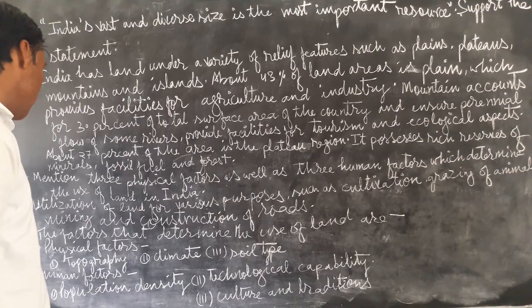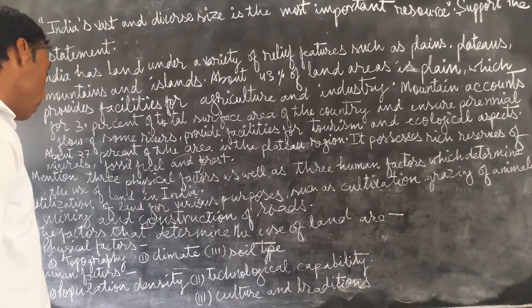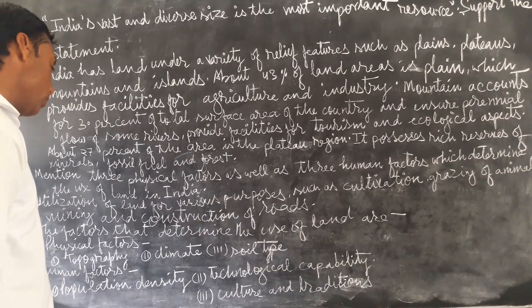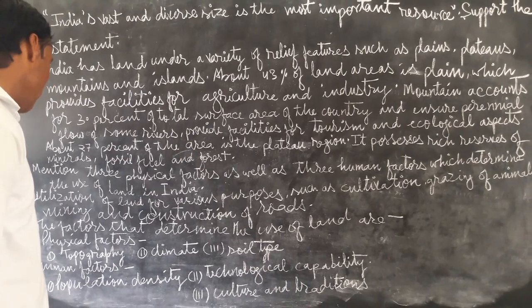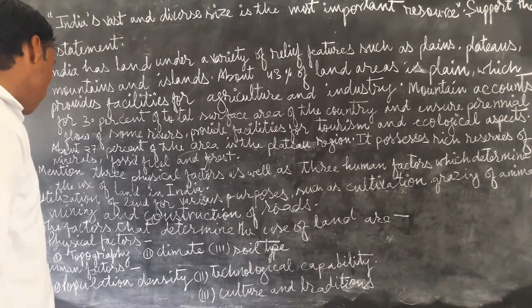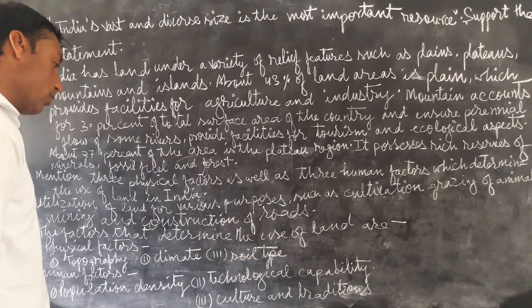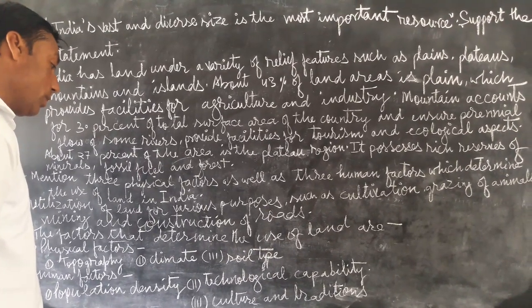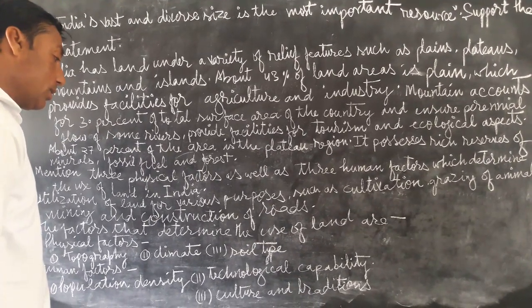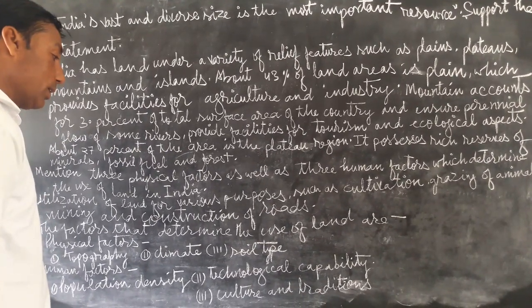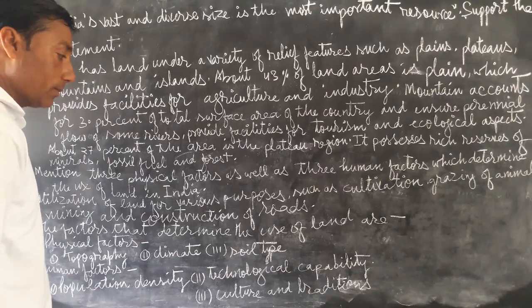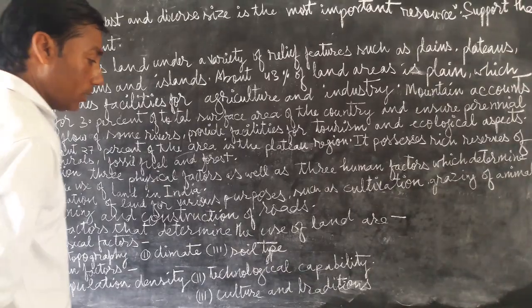What are the physical factors? Topography, climate, and soil type. And the human factors are population density, technological capability, and culture and traditions.